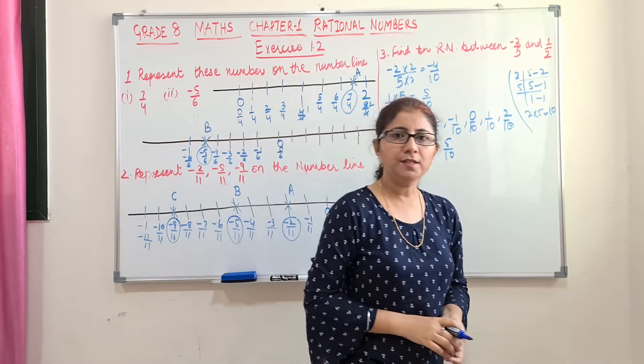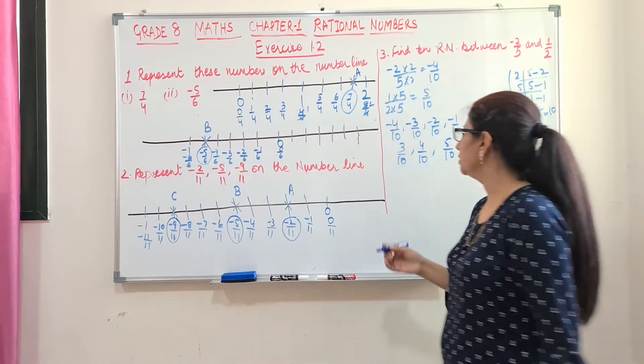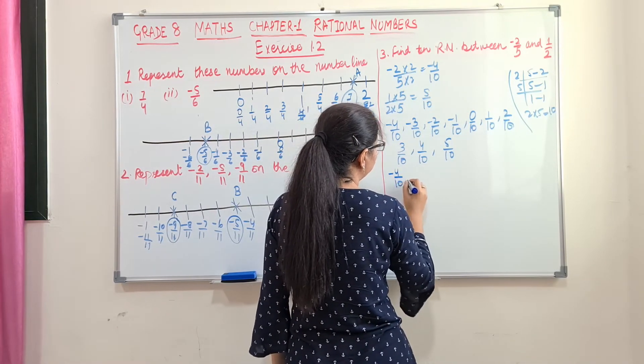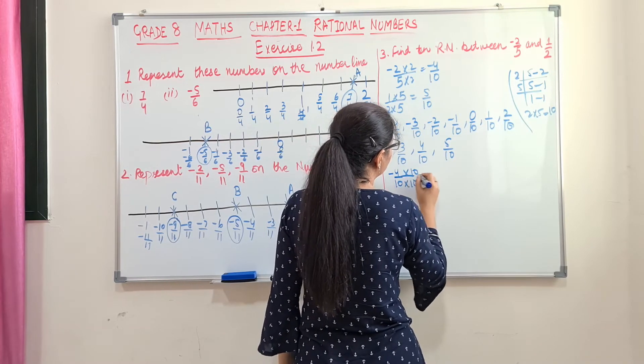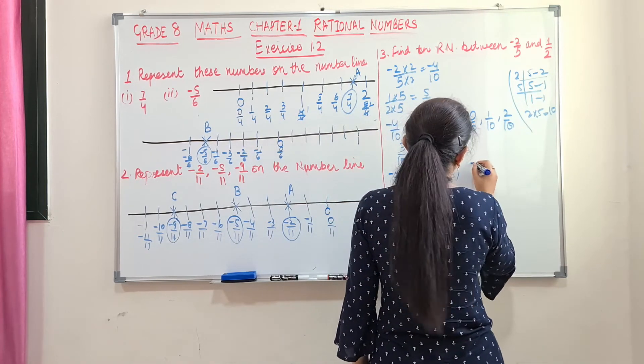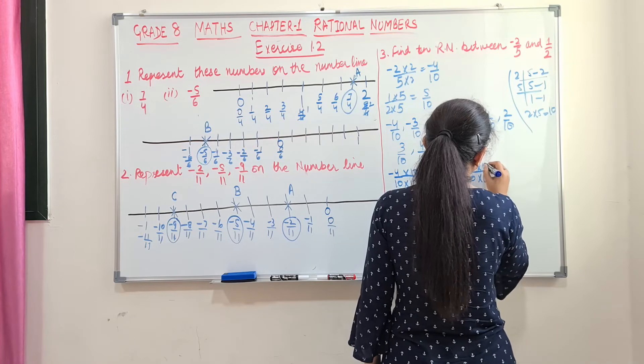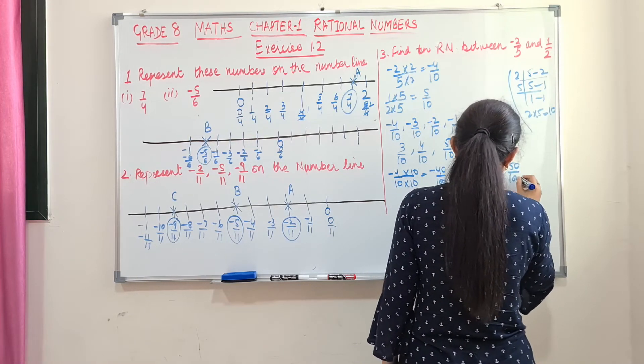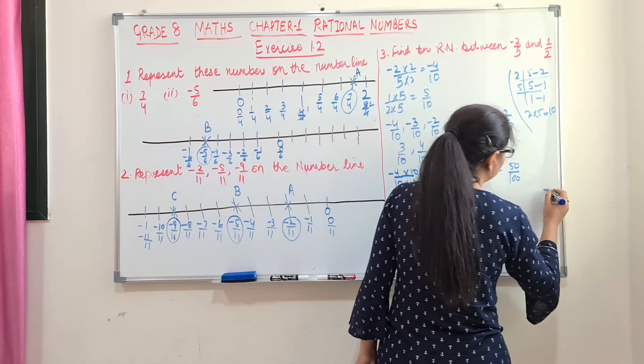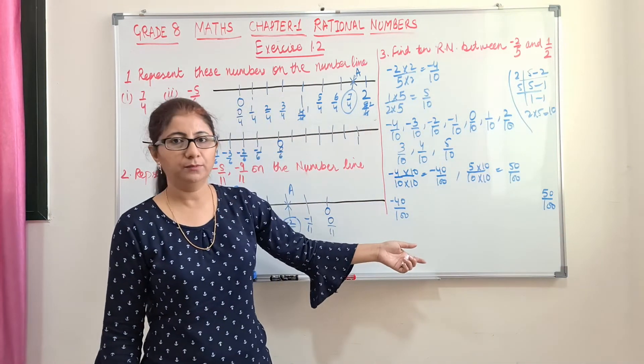So what to do next is we will multiply these numbers with 10 so that we can have a more range. So instead of this minus 4 by 10, I can write as 10 into 10. So I will get minus 40 by 100. Second is 5 by 10. Again multiply these numbers with 10. We will get 50 by 100. So now we can write any 10 numbers between these two numbers. So we can have almost 90 numbers.